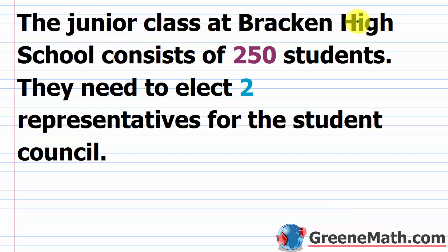The junior class at Bracken High School consists of 250 students and needs to elect two representatives for the student council. This is similar to the last question, but we'll use a different formula because now the order doesn't matter. Repetition is still not allowed, but if John gets the first representative position and Steve gets the second, it's the same result reversed — they're both just representatives.